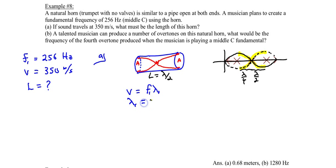So the wavelength at that harmonic is going to be V divided by the frequency. Speed of sound is 350 meters per second divided by the frequency of 256 hertz. And this will give you a wavelength of 1.37 meters.